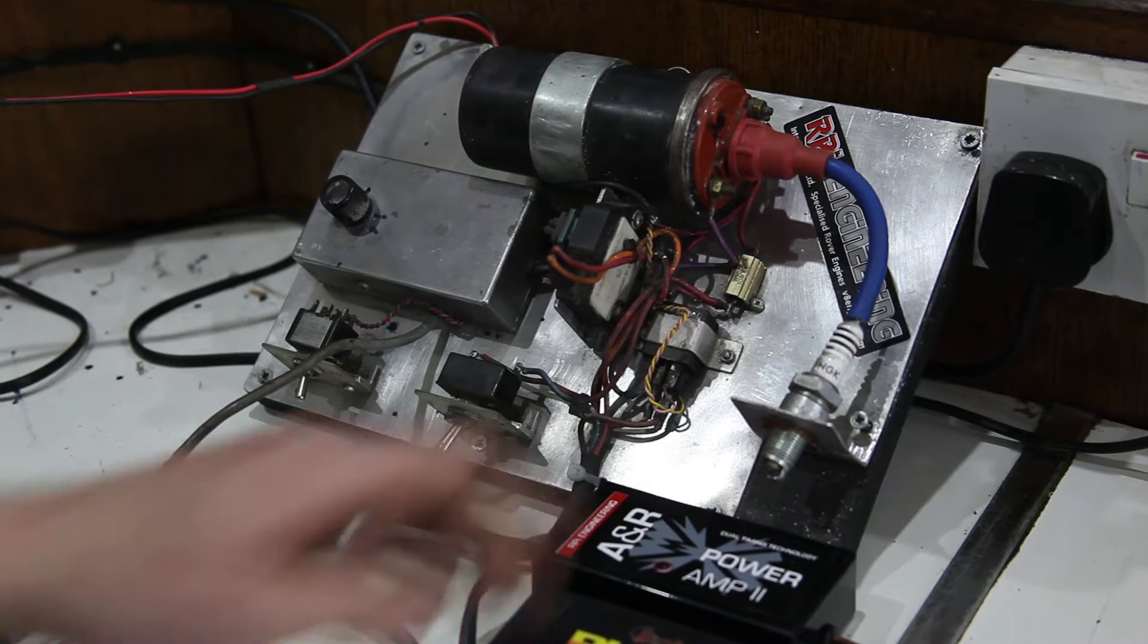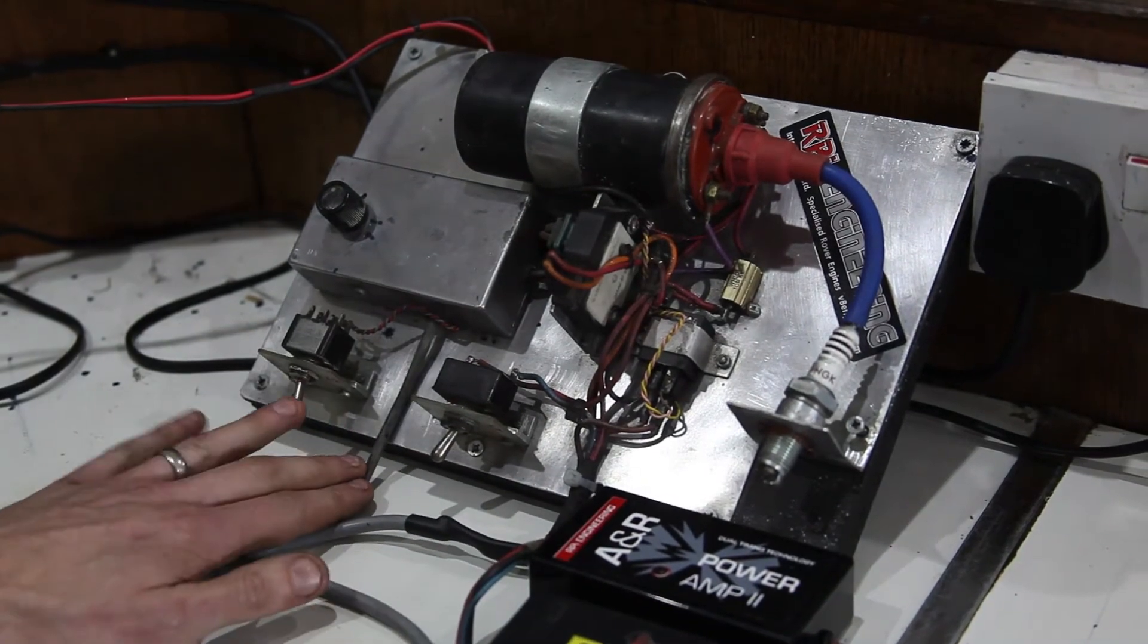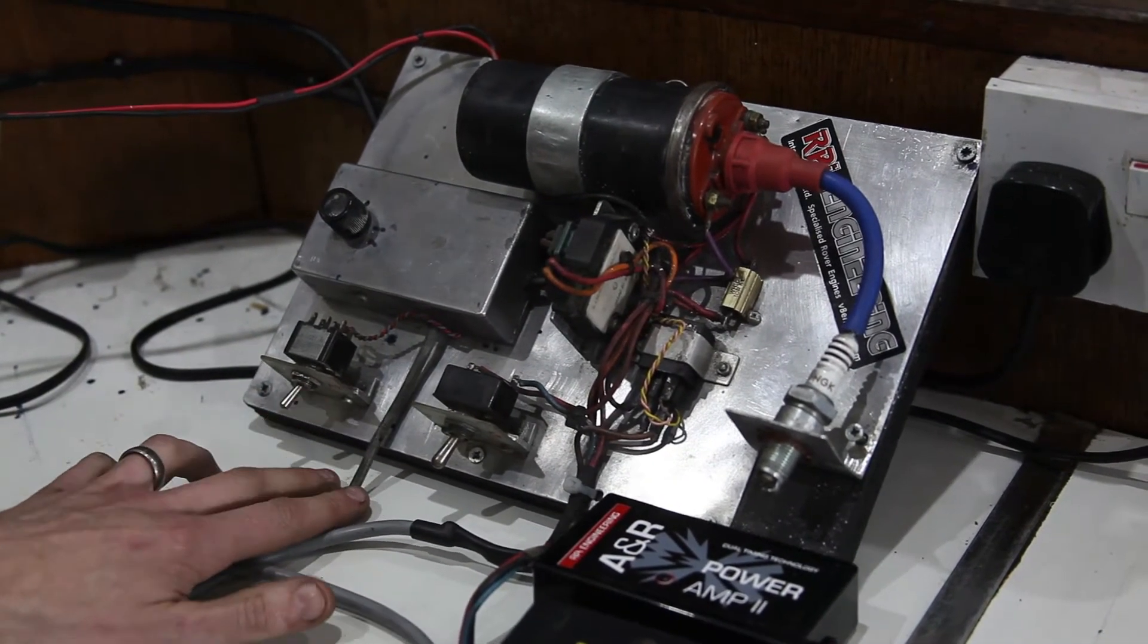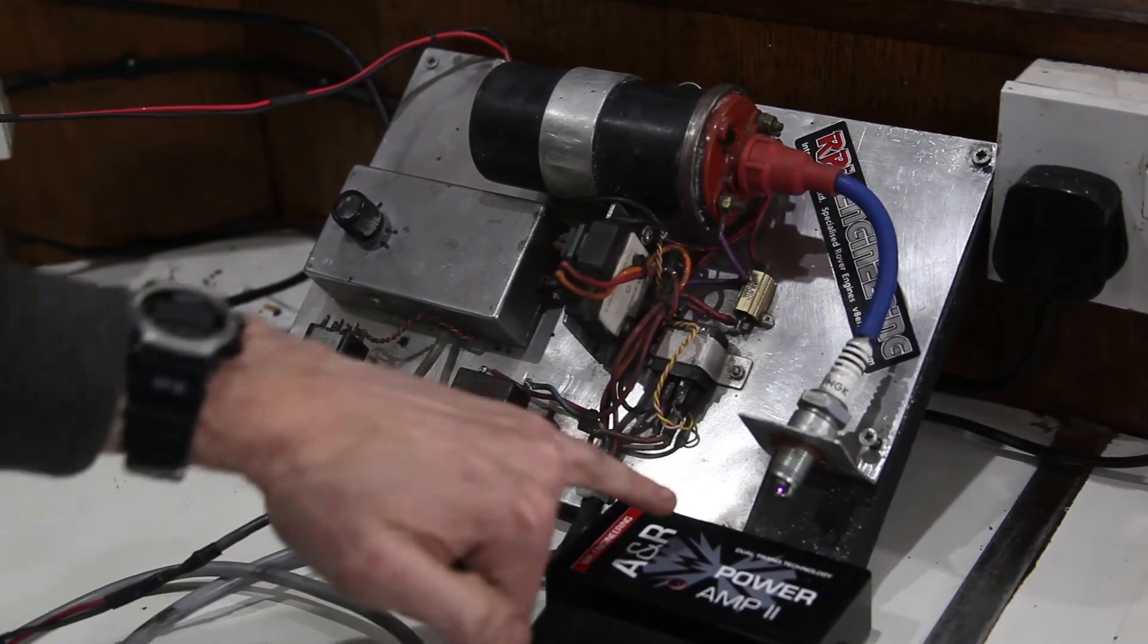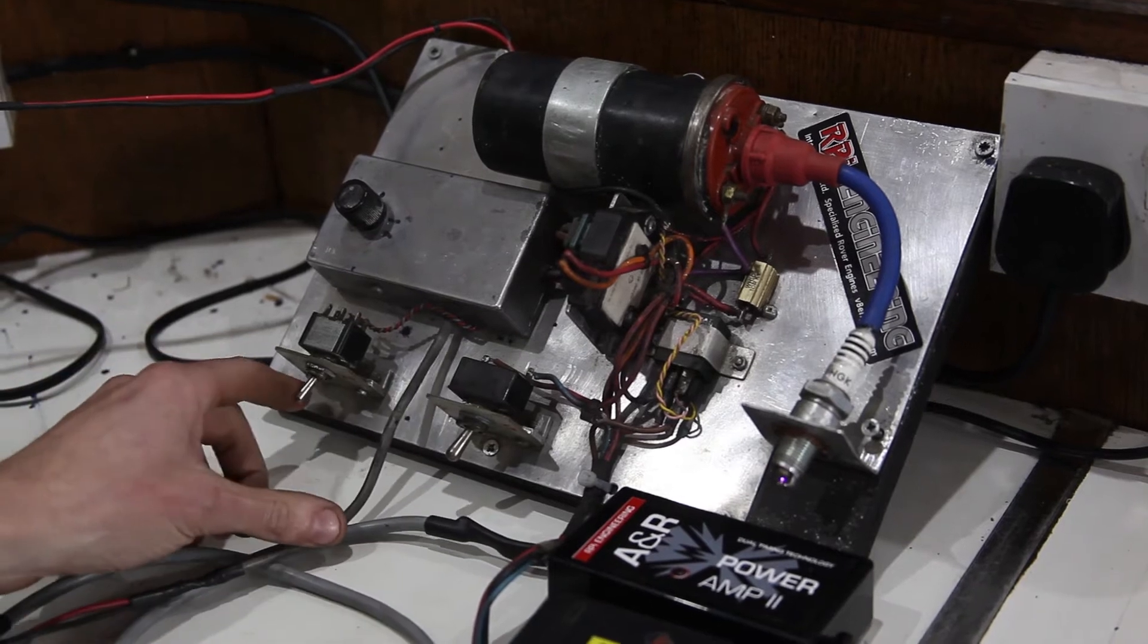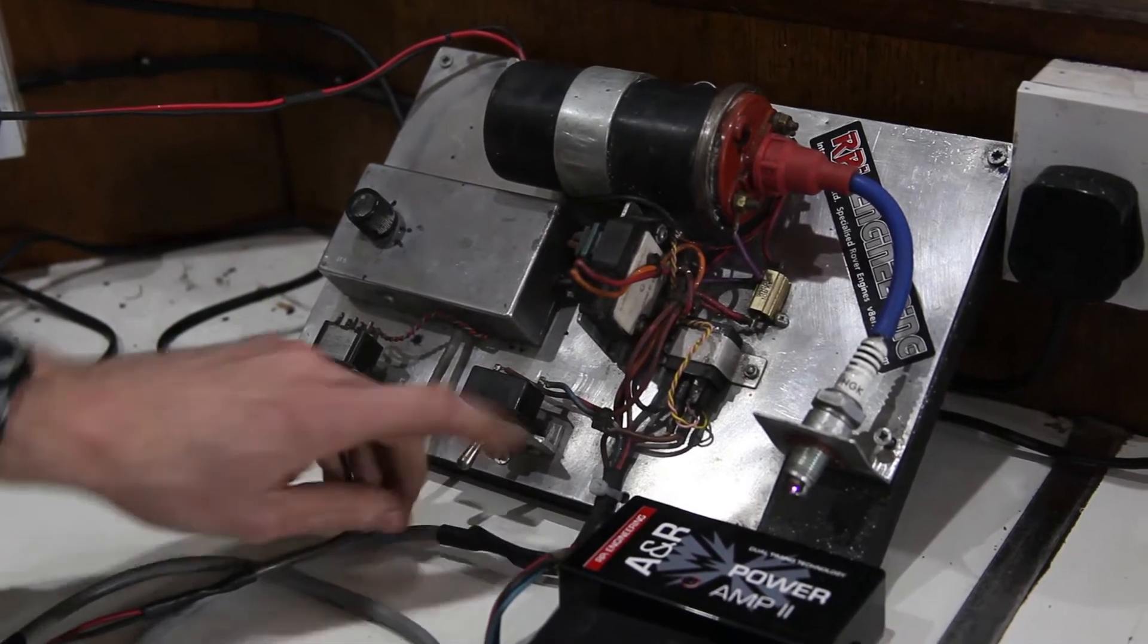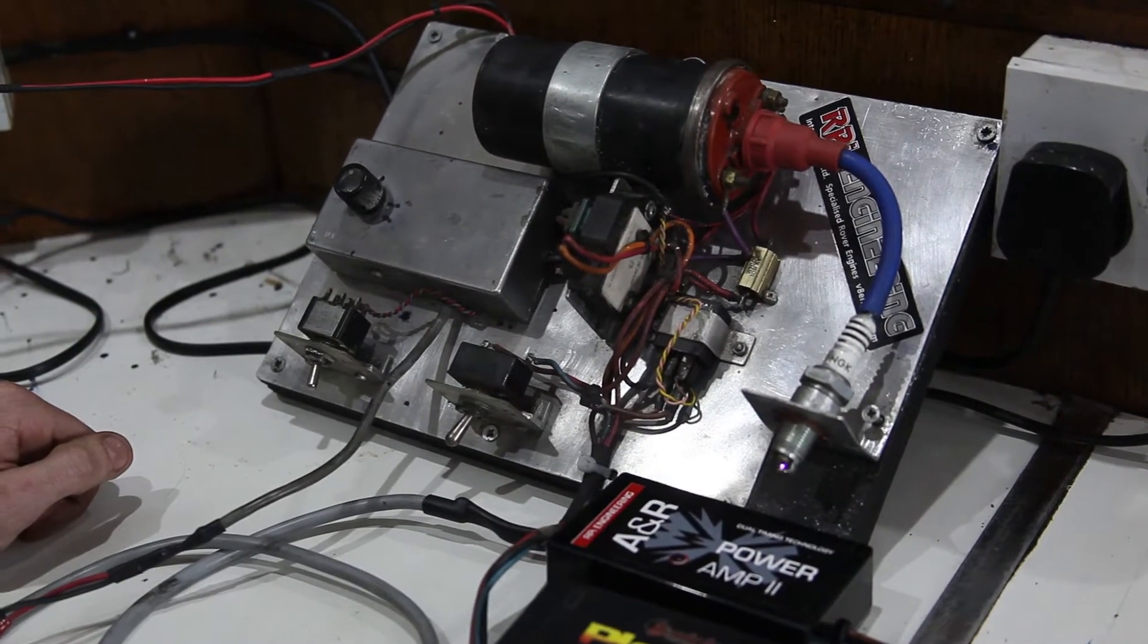We'll be using the switch on the left which allows us to switch between the Lucas amplifier and the RPI amplifier. If I turn this on, you'll see this is the Lucas amplifier on the left position with the standard spark. If I switch to the right position, you'll see we've got a much bigger spark straight away and we're running on the RPI amplifier.